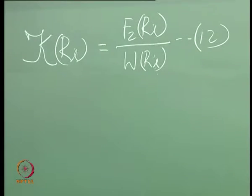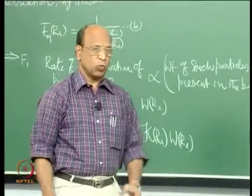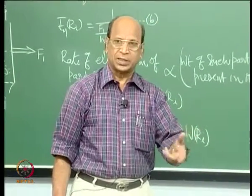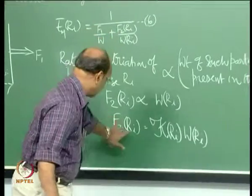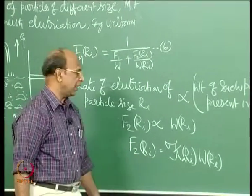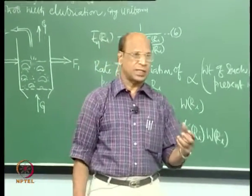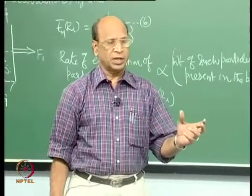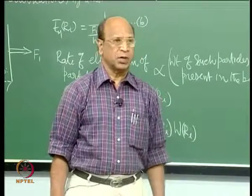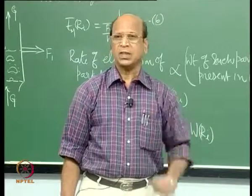This is simply a proportionality constant, like a first-order reaction. More 500-micron particles in the bed means a higher rate — directly proportional. In fluidization, elutriation is a separate field with many research papers published on different conditions, different particles, different flow rates, and many correlations are available.